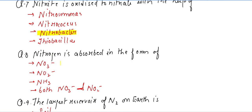The next question: nitrogen is absorbed in the form of nitrate, nitrite, ammonia, or both nitrate and nitrite? The answer is both nitrate and nitrite. This is the purpose of nitrogen fixation — converting nitrogen into absorbable inorganic compounds like nitrate and nitrite.